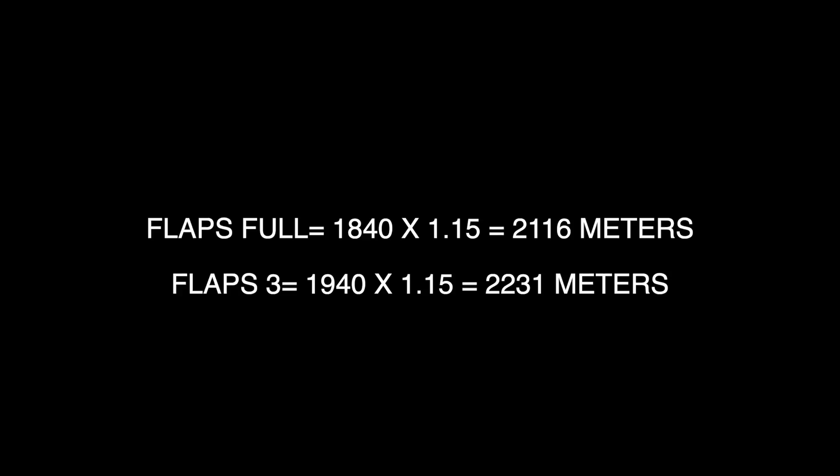We need to multiply these calculated distances by a factor of 15 percent — increasing them by 15% as per regulatory authorities, DGCA, and Airbus — to make our calculations more conservative. This caters for differences in wind or higher speeds over the runway. The resulting value is known as the FLD, or Factored Landing Distance. After applying the 15% factor, with flaps full we get 2,116 meters and with flaps 3 we get 2,231 meters.